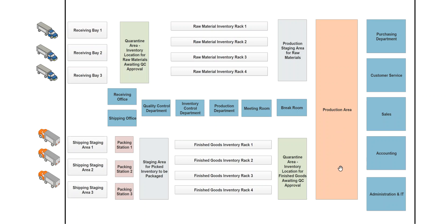Once the good is completed, the finished good is going to be moved from the production area over to another quarantine area. This is a quarantine area for the finished goods that have completed through the manufacturing process. At this juncture, the quality control department will be notified that the goods have been made. They will perform the necessary tests on those goods, and once the goods are deemed as being good, the warehouse personnel will go ahead and transfer those goods from quarantine over to a finished good storage area.